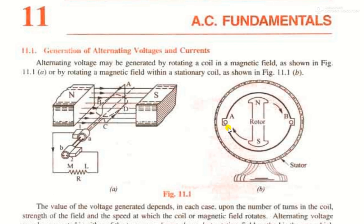For the generation of voltages and current in AC, the necessary condition — the idea behind it — is Faraday's laws of electromagnetic induction. Faraday tells us that the relative motion between the conductor and the magnetic field gives us AC current and voltages. The first case is that we keep the magnetic field stationary and move the conductor, so that the magnetic flux is cut by the moving conductor, which collects and gives us a quantity of electric power.